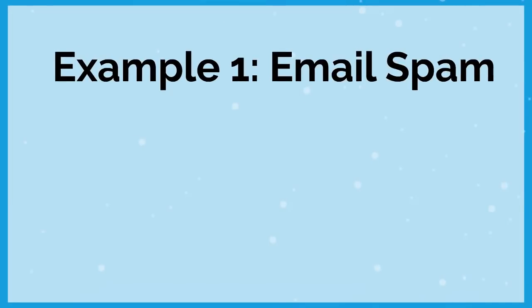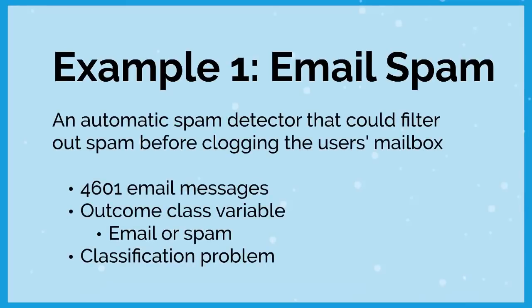Example one: email spam. This was a real problem solved with machine learning. An automatic spam detector was developed that could filter out spam before clogging the user's mailbox. They had a dataset of 4,601 email messages and classified them into either email or spam — two classes. It's either a genuine email or a spam email. Because our output is a class, this is a classification problem. Not all errors are equal here; we want to avoid filtering out good email, while letting spam through is less serious in its consequences.